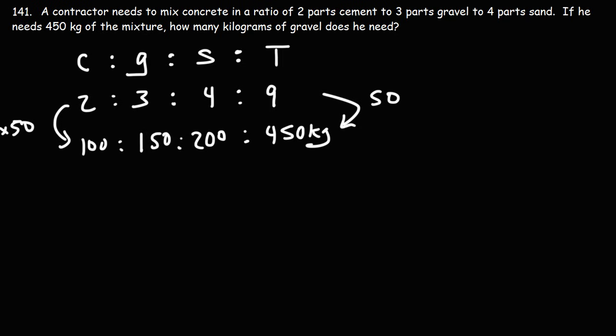So now we can figure out any part of the problem that we need. We need 100 kilograms of cement, 150 kilograms of gravel, 200 kilograms of sand. That will give us 450 kilograms of the total mixture. Now the question specifically asks for the kilograms of gravel that he needs. So that's 150. So that's the answer. He needs 150 kilograms of gravel.